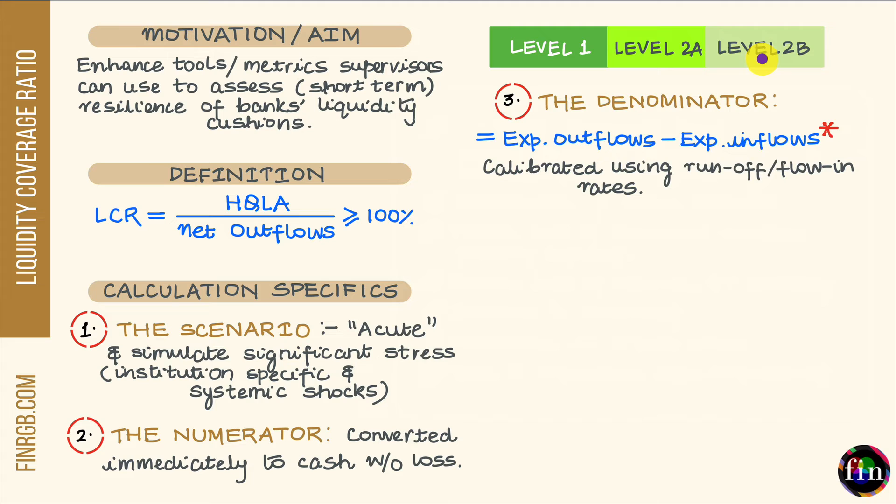Coming on to level two B. In this category, you would include plain vanilla corporate debt rated BBB- or higher, residential mortgage-backed securities, and equities. The haircuts for this category go from 25% all the way to 50%.